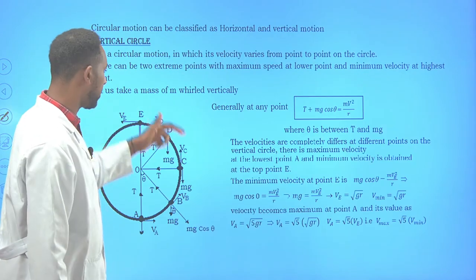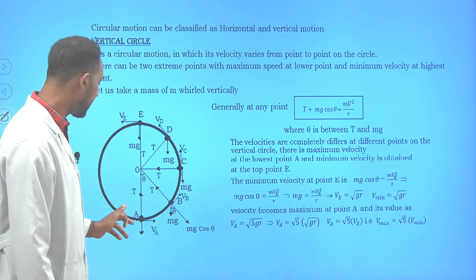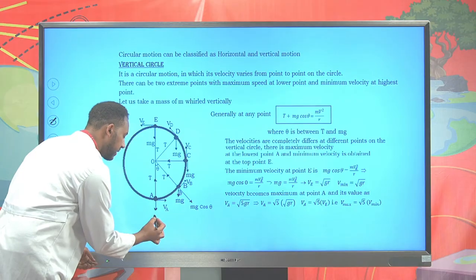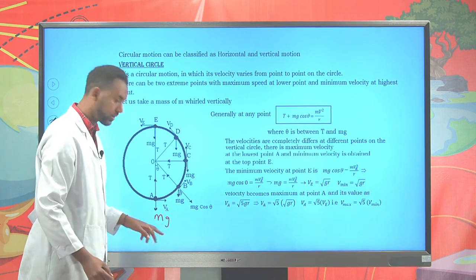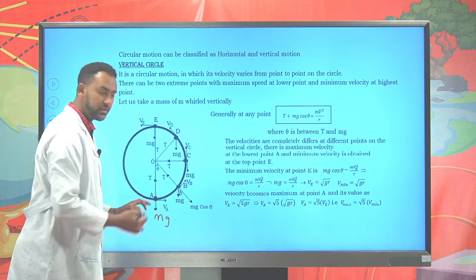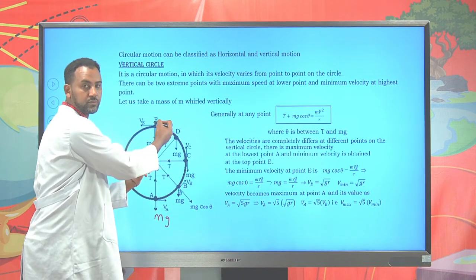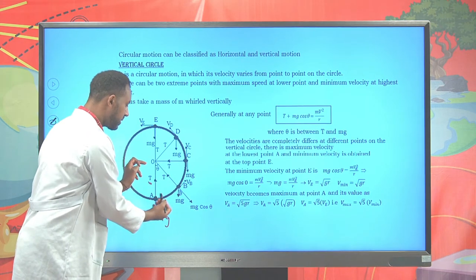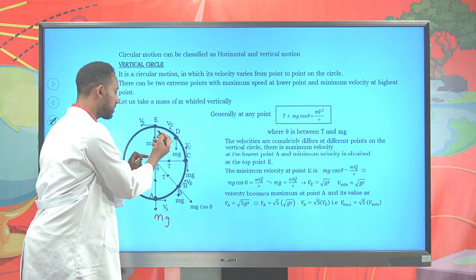The vertical circle and horizontal circle have different properties. On a vertical circle, when the particle is at the bottom, there is a weight acting downward and a tension acting upward. The tension changes everywhere as it moves from bottom to top. The tension is maximum at the bottom, then gradually decreases, and at the top the tension becomes zero.